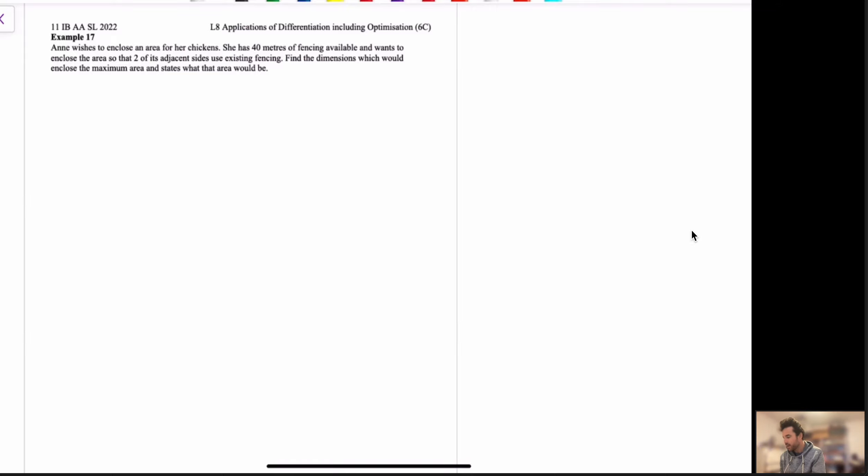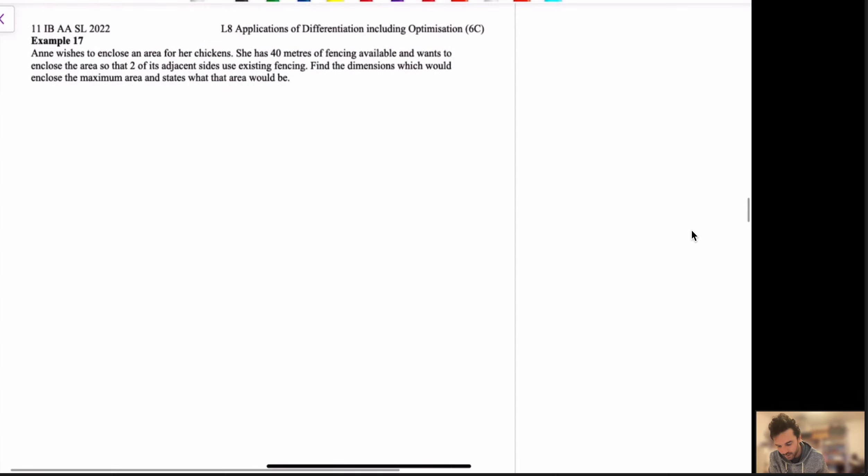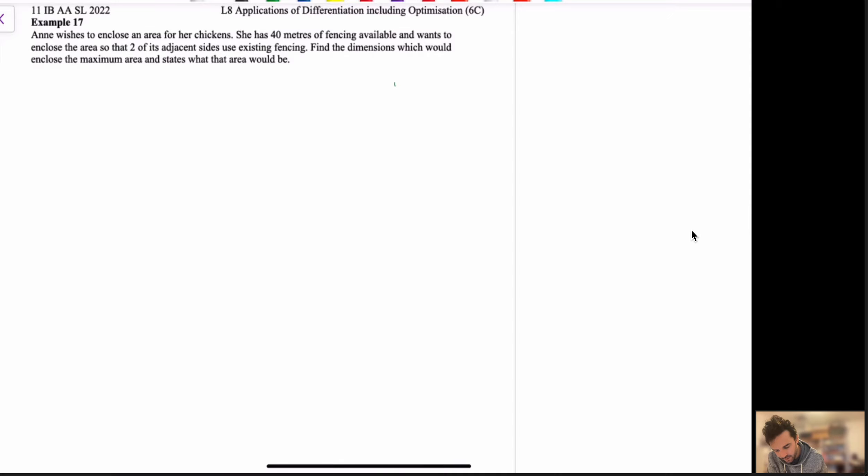Okay, now in this case here, I like to draw a little picture to represent the situation. So, we can see two of the adjacent sides use fencing. So, I'm going to notate like that, and then these other two sides don't use those existing fencing. Okay, now this is rectangular, so I'm going to call that A, and we call that B. That's the width and the length. So, we've got that established there.